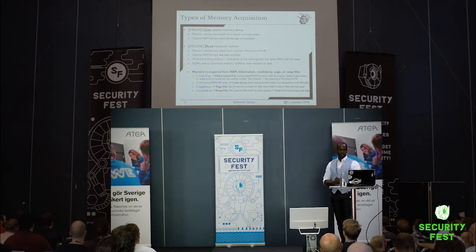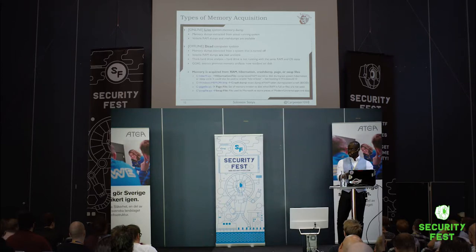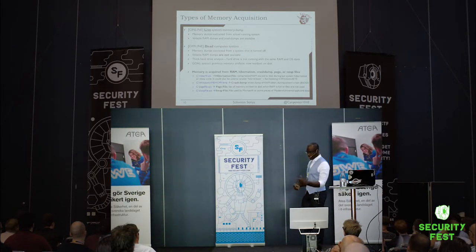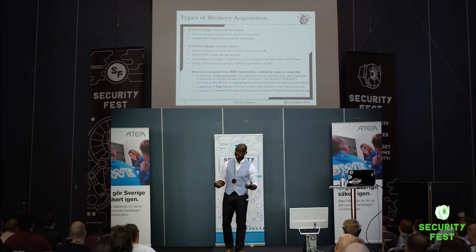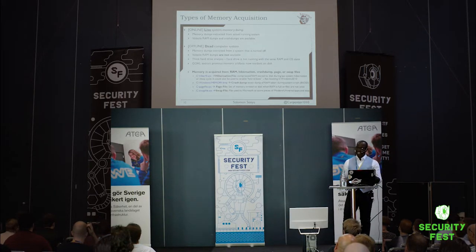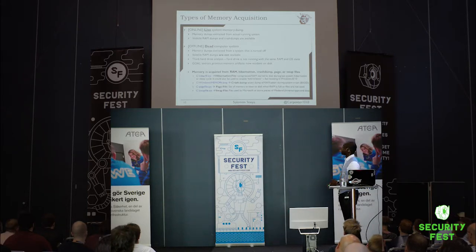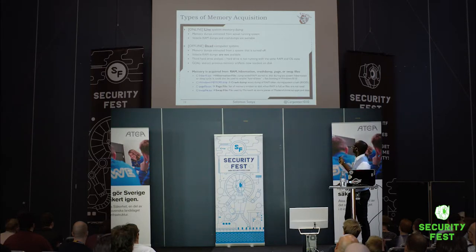There are two main types of memory analysis: online and offline. Online means a live running system — live acquisition. Offline analysis is for a dead system — one that's off or crashed, where you extract the hard drive and send it to others for analysis. When extracting memory from a live system you go for volatile RAM. If the system is off, you can look at the hibernation file for an exact duplicate of memory at its last state, crash dumps from blue screen of death, or the page file and swap file.